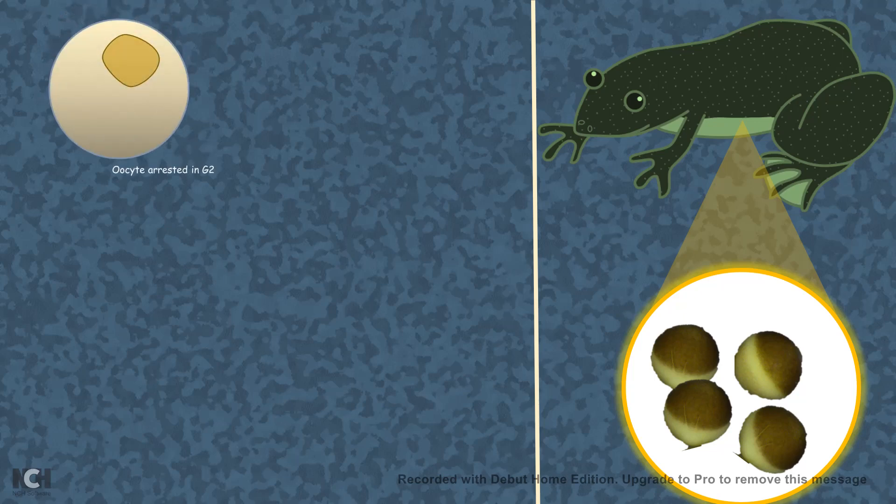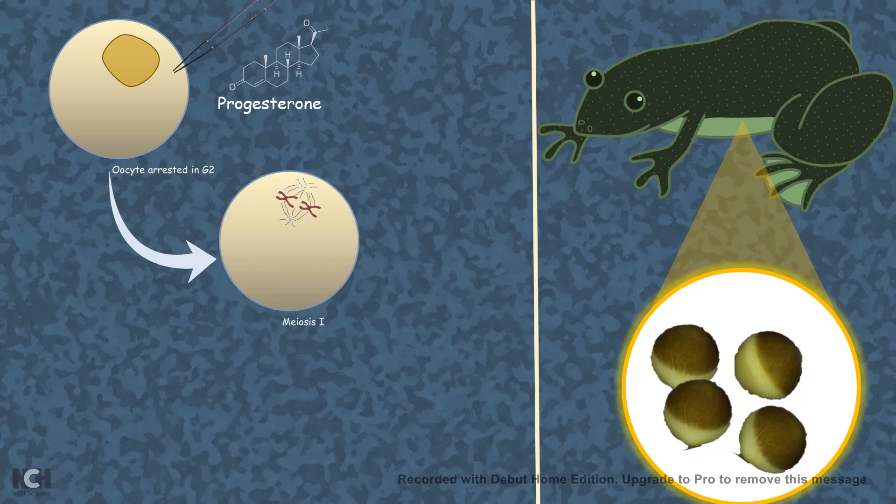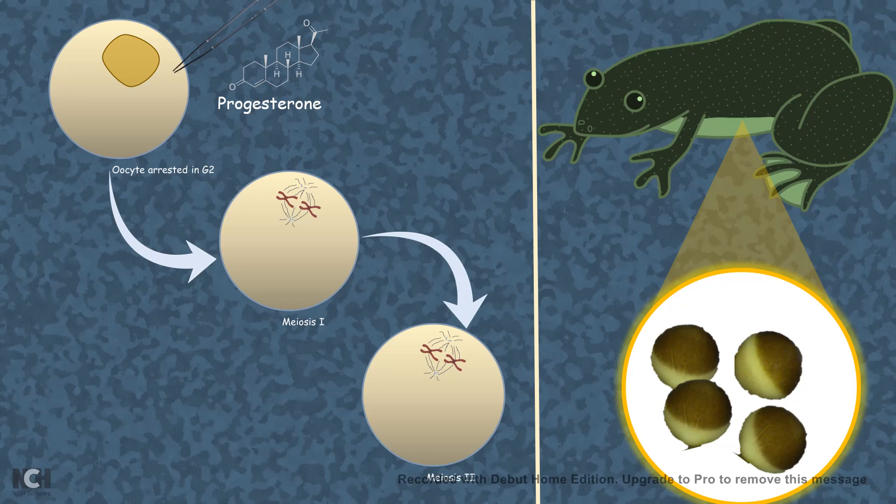And when this Xenopus oocyte, which were arrested in G2 in an immature state, was injected with progesterone, what happens is it really matures to meiosis II, a metaphase-blocked oocyte, ready to be fertilized. So this process is known as the oocyte maturation.